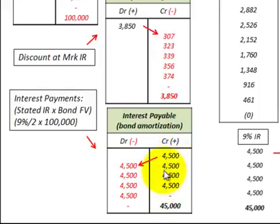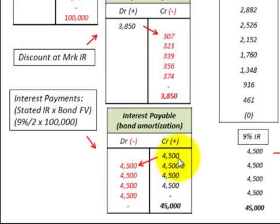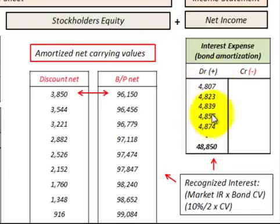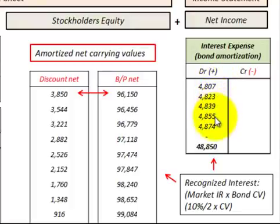We've got a five-year bond, so we'd have 10 payments, at 4.5% interest per payment times that $100,000 face value, giving us a $4,500 payment. Then we go and recognize our interest expense on that bond for the same periods. That interest expense is based on the market rate of interest of 10% times the bond's carrying value.